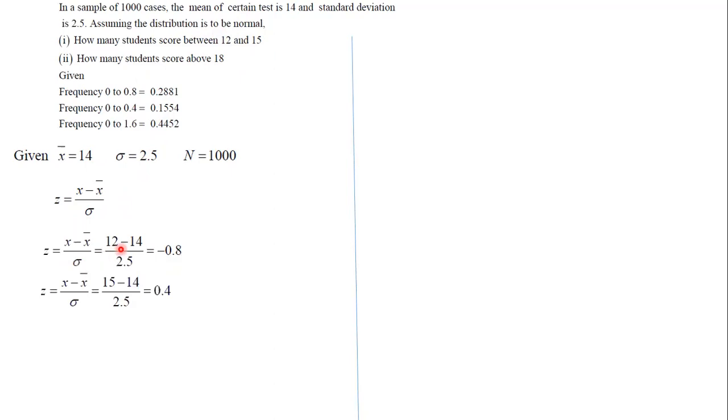So if we substitute 12 in place of x with this mean and this standard deviation, this will be -0.8. The curve for normal distribution is symmetric, so we'll just take the frequency for 0.8 negative, which will be 0.2881.